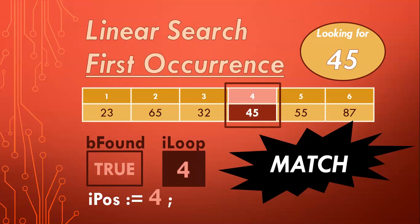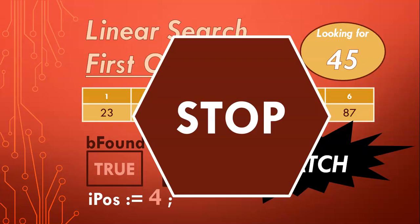So we found it and recorded the position. What do we do next? Well, we need to stop because we found what we're looking for. We don't need to carry on any further — we can stop the loop. And that makes this algorithm quite efficient: the moment we find what we're looking for, we can stop looking.